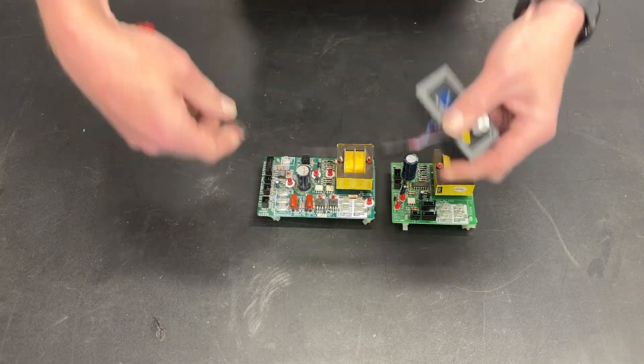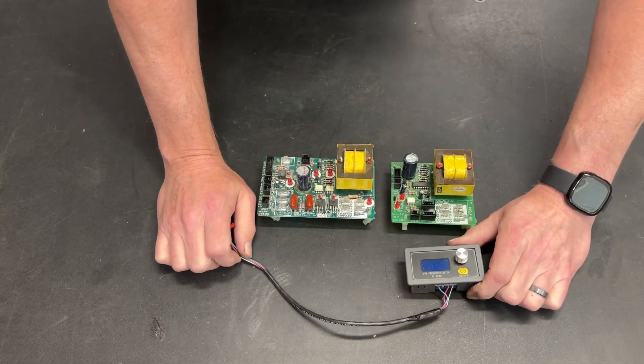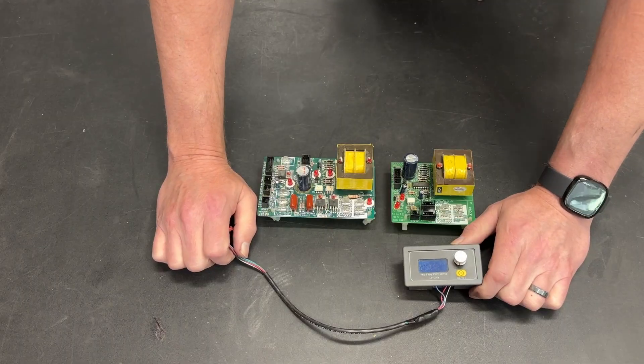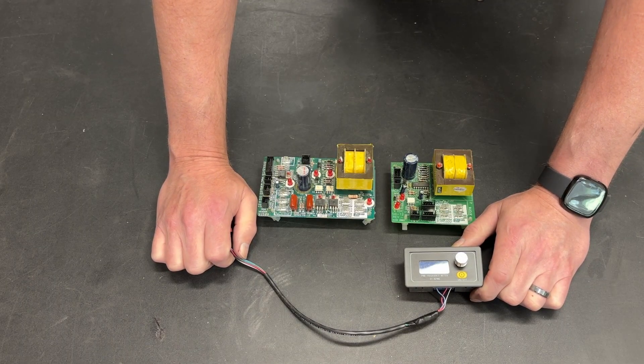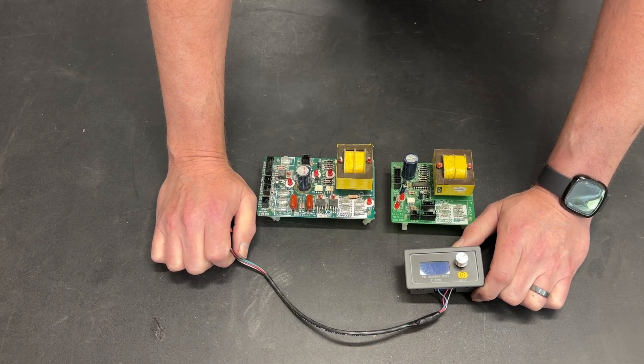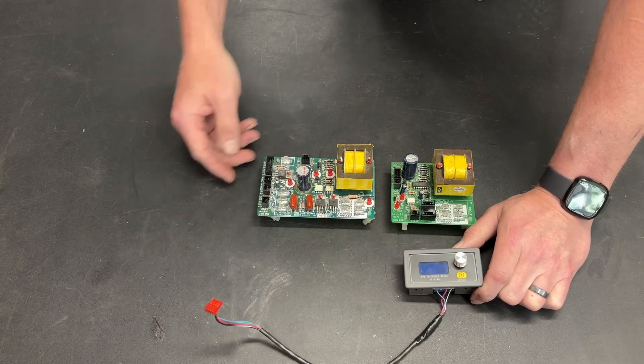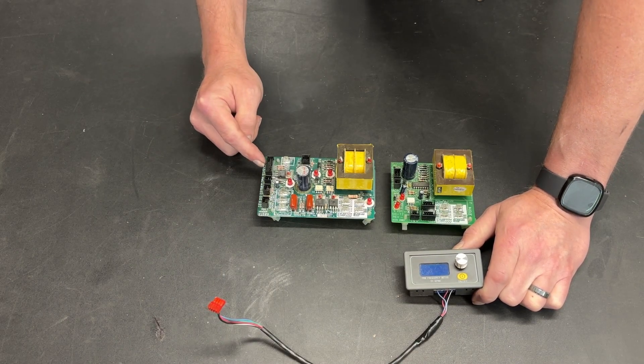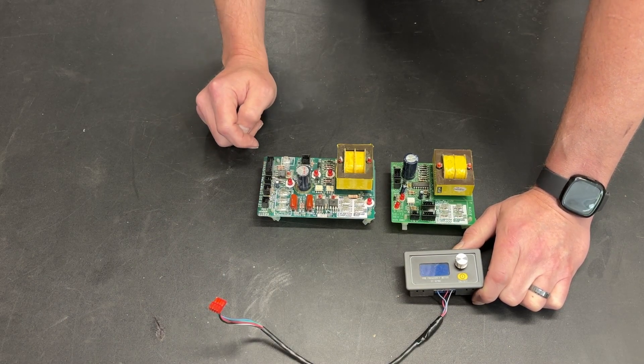Well, this is a pulse width modulator, and it's designed to create a pulsing signal. And it is also used to hack any number of different treadmill motor controllers. If we look here on the output, this takes a pulse width signal.